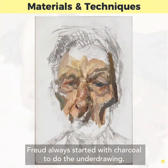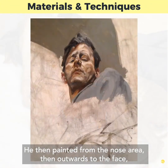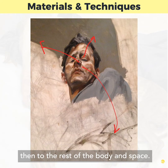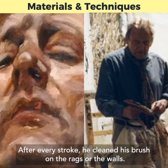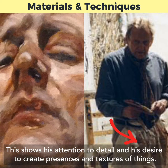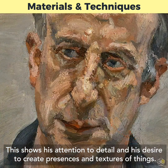Freud always started with charcoal to do the underdrawing. He then painted from the nose area, then outwards to the face, then the rest of the body and space. Each stroke creates a patch of close-toned hues. After every stroke, he cleaned his brush on the rags or the walls. This shows his attention to detail and his desire to create presences and textures of things.